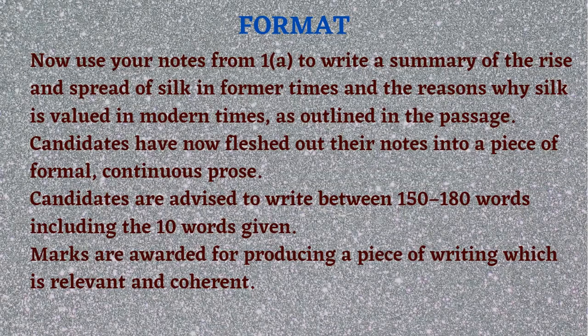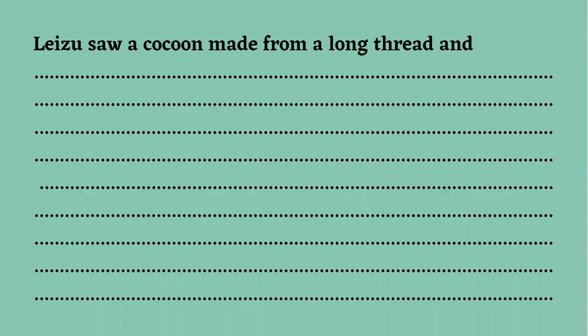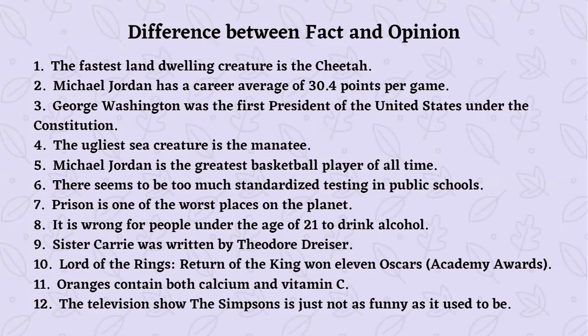Marks are awarded for producing a piece of writing which is relevant and coherent. Relevant means it should contain all the required content points. Coherent means all sentences should be connected with one another through the use of connectors. The question begins with an unfinished sentence: 'Lizu saw a cocoon made from a long thread and...' — you have to complete this sentence to start your summary. With this we come to the end of summary writing.